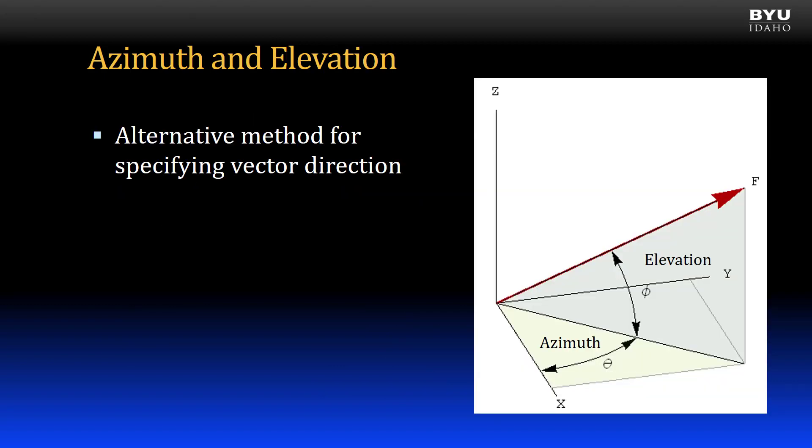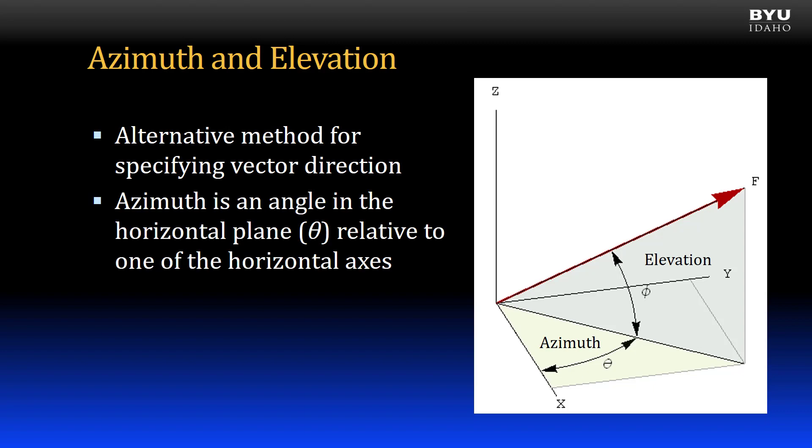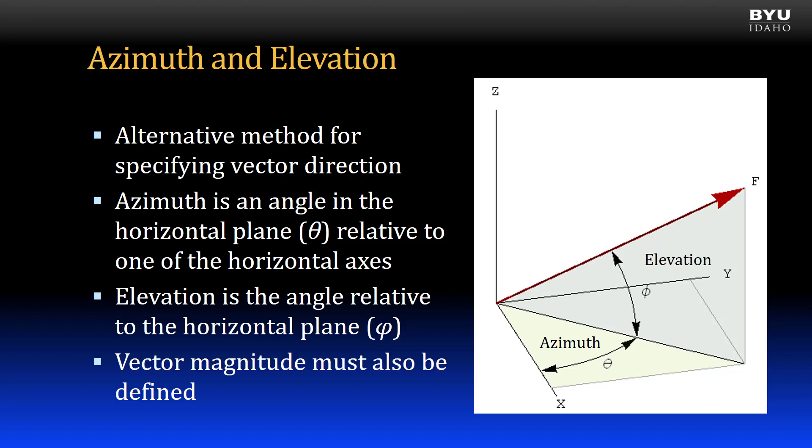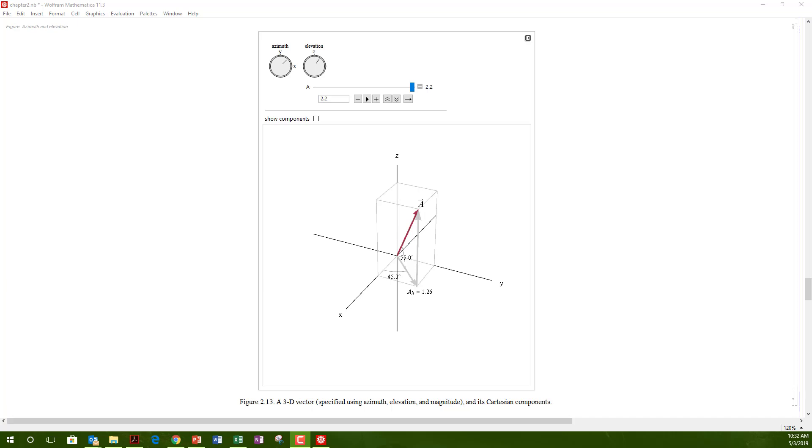As previously mentioned, there is another common method for specifying the direction of a vector in three-dimensional space. This is by using two angles, the azimuth and the elevation. The azimuth is an angle in the horizontal plane and is measured from one of the axes in the plane. In the figure shown, the azimuth is the angle theta as measured from the positive x-axis. The elevation is the angle of the vector relative to the horizontal plane. In the figure, the elevation is the angle phi as measured from the horizontal plane. To fully define the vector, the magnitude is required in addition to the two angles.